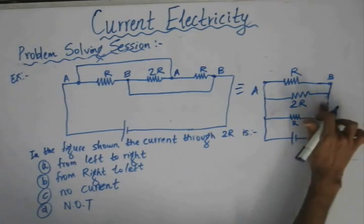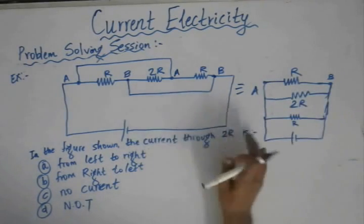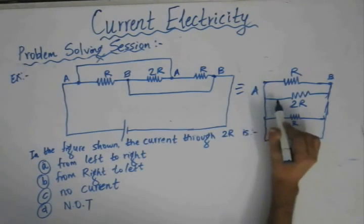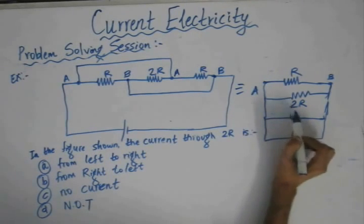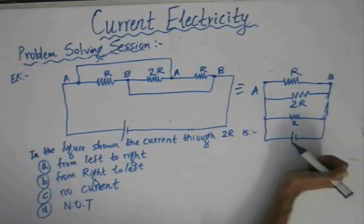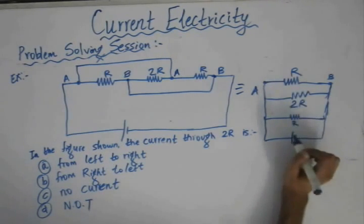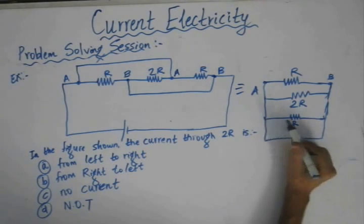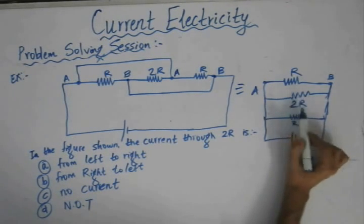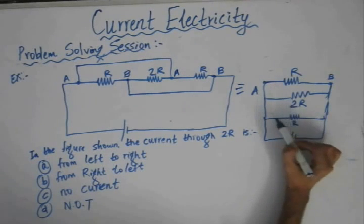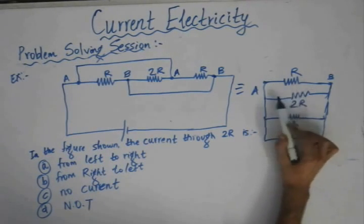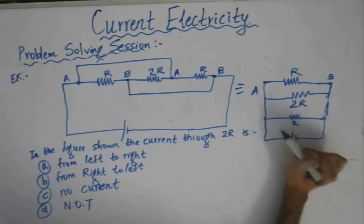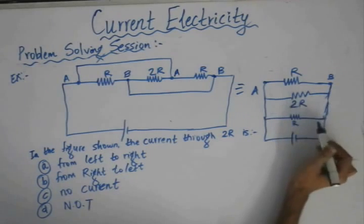This is the equivalent circuit for the original problem. We need to determine the direction of current flow through the 2R resistor. All these resistors are connected in parallel. Since all have finite resistance, current flows through each. The direction of current flow is from the high potential end to the low potential end.